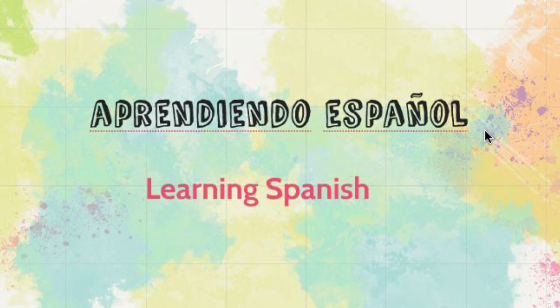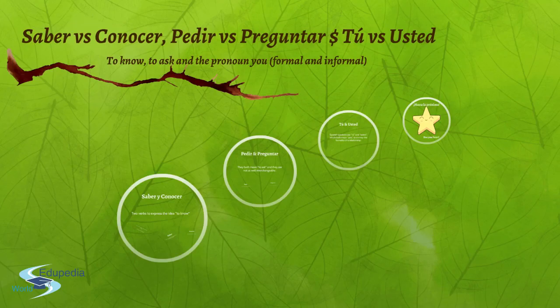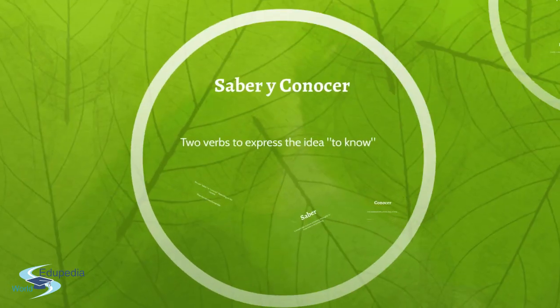Hello friends and welcome to edupediaworld.com. In today's video we are going to learn how to say 'to know,' 'to ask,' and 'to pronounce you' in Spanish. So, saber versus conocer, pedir versus preguntar, and tú versus usted.